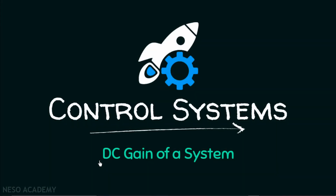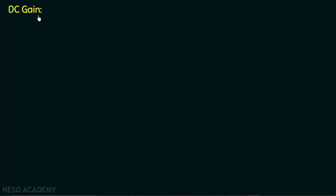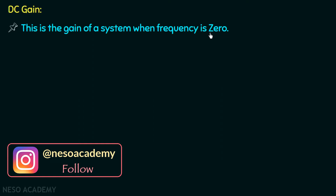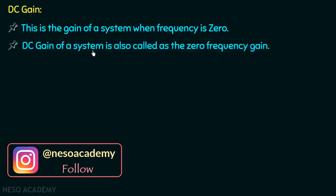Hello everyone and welcome back to the next lecture of control systems. In this presentation, we are going to discuss the DC gain of a system. The DC gain is an important parameter of a system. This is the gain of a system when frequency is zero, and that's why the DC gain of a system is also called the zero frequency gain.